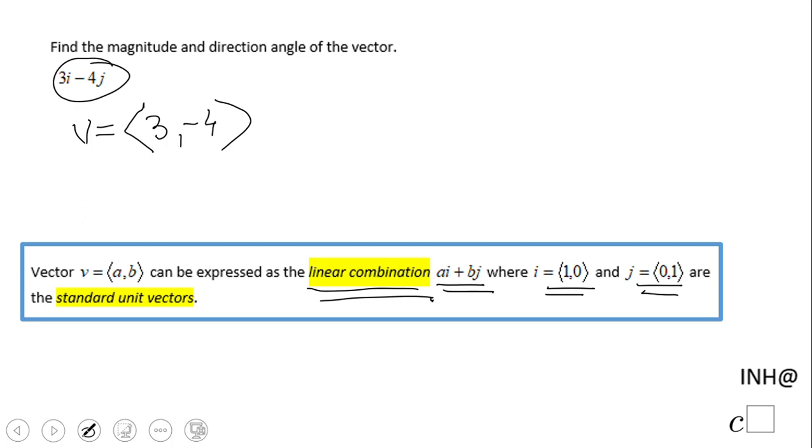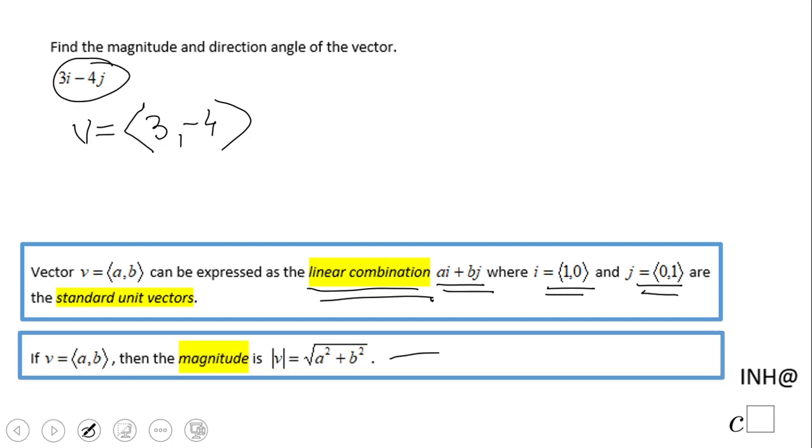Now, for finding the magnitude, I'm going to use this formula. Since we have the component form, we have the square root of 3 squared plus negative 4 squared, and that will be 9 plus 16, which will be square root of 25. The magnitude of vector v will be 5.